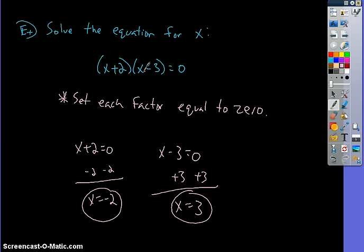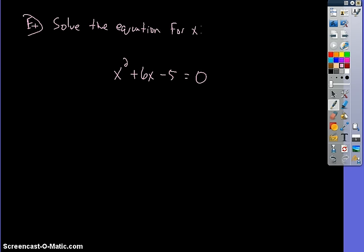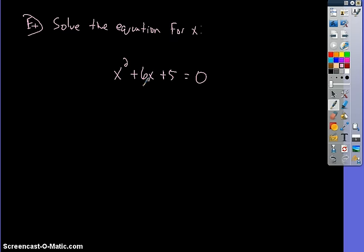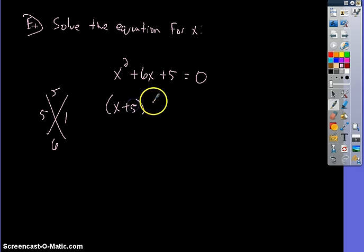Let's do a different one — solve this equation for x. You'll notice it looks different from our last ones; those were already factored, but this one is not. So you should ask, can I factor this? Can I find two numbers that multiply to be 5 and add to be 6? Using the X method: 5 and 1 work. So the factors are (x+5)(x+1) equals 0.